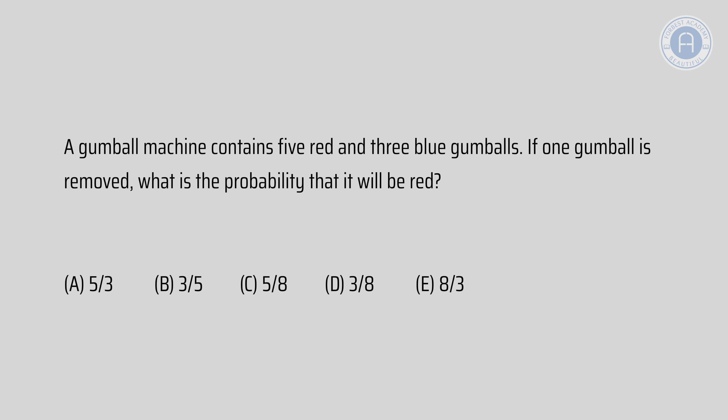A: 5 over 3, B: 3 over 5, C: 5 over 8, D: 3 over 8, or E: 8 over 3. Now if you watched our previous probability video, you will have learnt that the formula for probability is: the numerator is the number of desired outcomes, where the denominator is the number of possible outcomes.